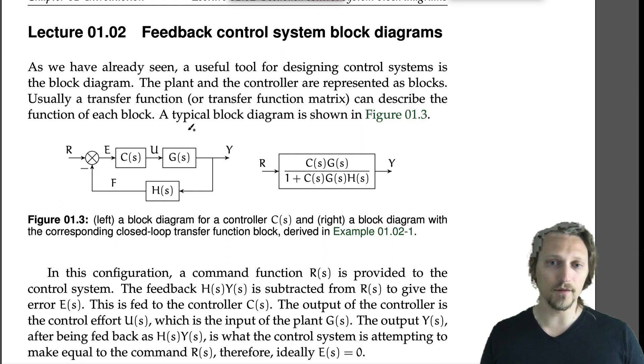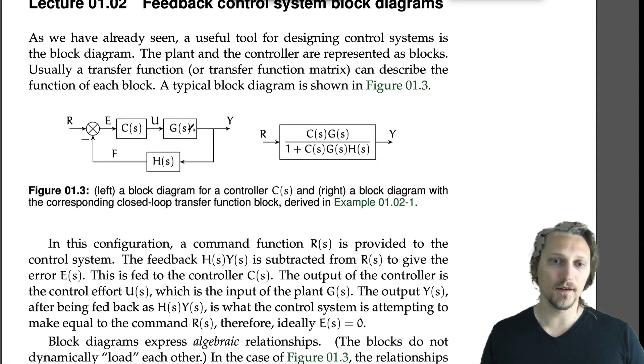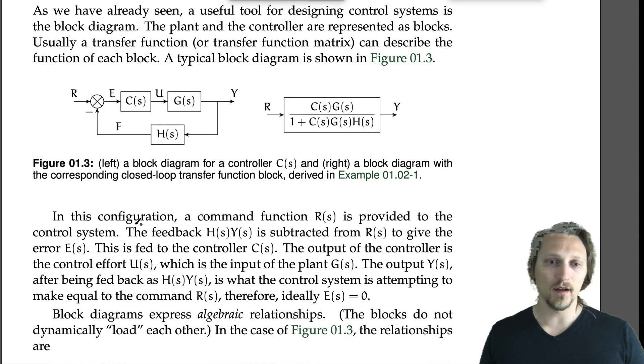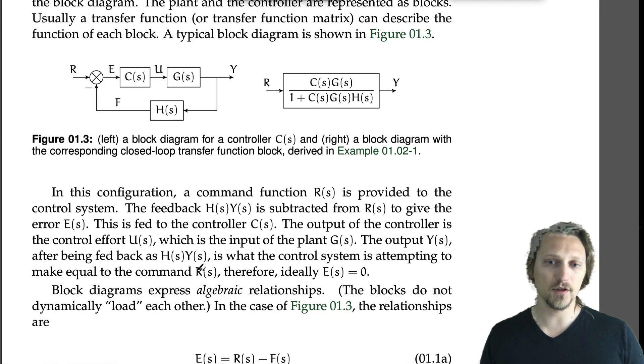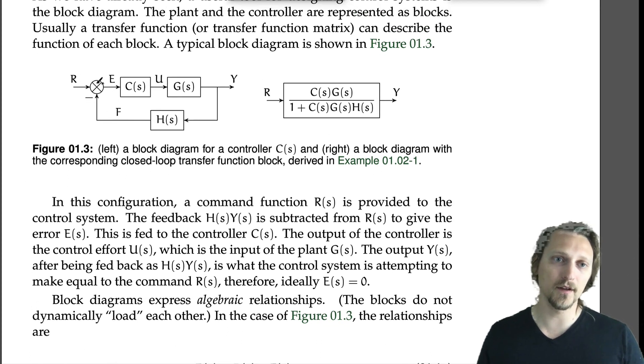The output of the controller transfer function is U, which is the input to the plant, also the control effort. In this configuration, ideally the error is going to be zero. That's what we want, the error to be zero.